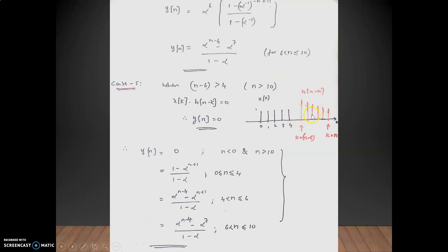Case 5: when n > 10, n - 6 is greater than 4, meaning h[n-k] has moved completely past x[k] with no overlap. Hence y[n] = 0 for n > 10. The final answer for the convolution sum: y[n] = 0 for n < 0 or n > 10, with expressions from cases 2, 3, and 4 for the intermediate ranges.